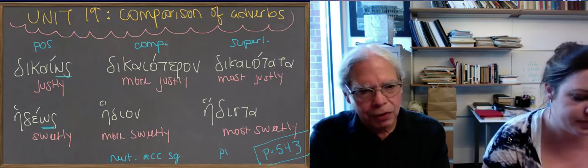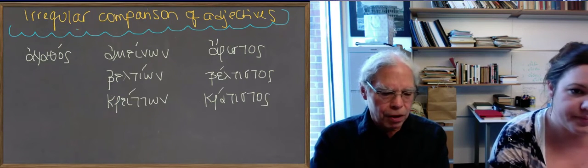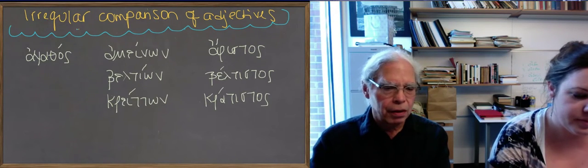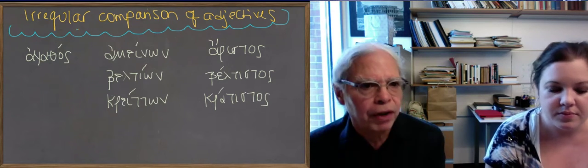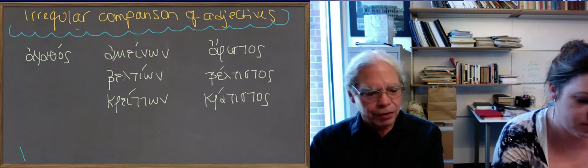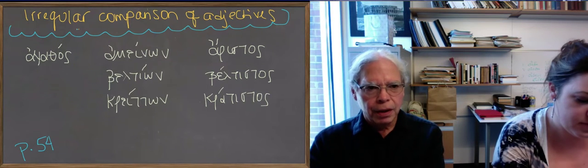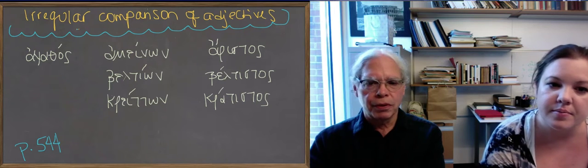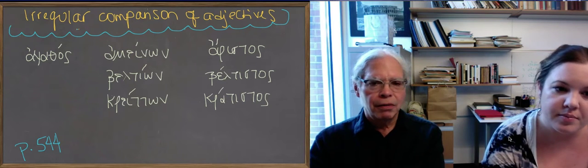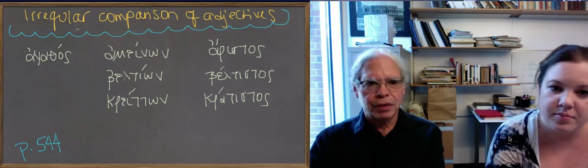Alright, so now let's take a look at some of the most common adjectives and their comparatives and superlatives. Paulisha has put these on page 544 of the book. There's a list. We're not going to talk about all of them, but these adjectives, you need to learn their comparatives and superlatives. In other words, you're going to see them in Greek from the get-go. So we might as well start learning them.